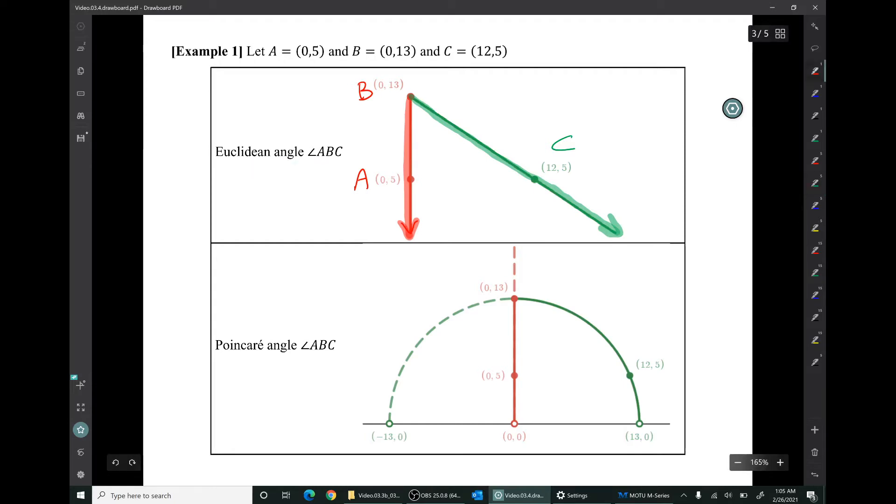For the same three points, Poincaré angle ABC is shown here. Here's point A, here's point B, and here's point C. So Poincaré ray BA is this ray with the missing endpoint at (0, 0). This ray doesn't keep going down below the x-axis. It has a missing endpoint at this location, (0, 0). Ray BC is this quarter circle. It has a missing endpoint here.